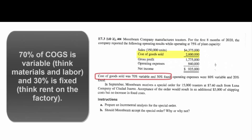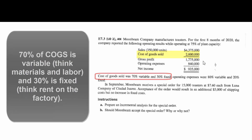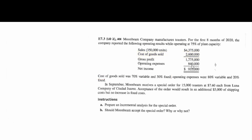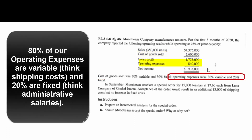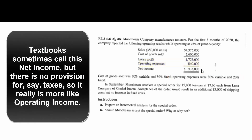Our cost of goods sold is $2,600,000, and of that, 70% is variable and 30% is fixed. That gives us gross profit of $1,775,000. Subtract our operating expenses of $840,000 — those are 80% variable and 20% fixed — and we end up with net income, or more precisely operating income, of $935,000.